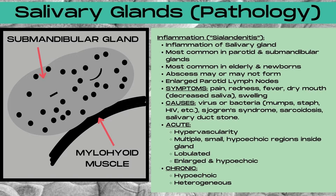Causes of sialadenitis include a virus or bacteria such as mumps, staph, HIV, Sjögren's syndrome, sarcoidosis, or a salivary duct stone that blocks the duct leading to obstruction, inflammation, and even infection. In cases of acute sialadenitis, the gland is going to appear heterogeneous on ultrasound with multiple small hypoechoic regions inside. It's going to be hypervascular with Doppler ultrasound, lobulated, enlarged, and with a relatively hypoechoic background echogenicity.